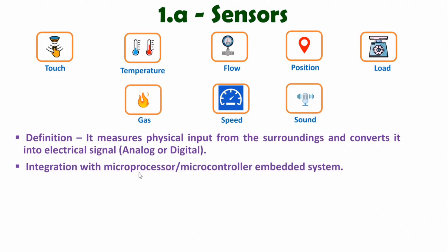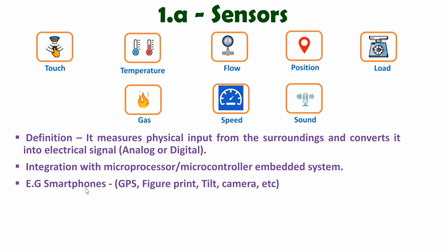For example, if you are using a smartphone, there are many sensors inside it — such as a GPS sensor, fingerprint sensor, tilt sensor, and camera. Similarly, there are many sensors available in smartphones. We may also have IoT applications that include some of these sensors as well.